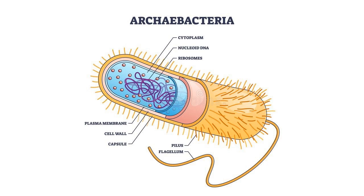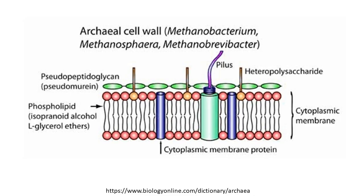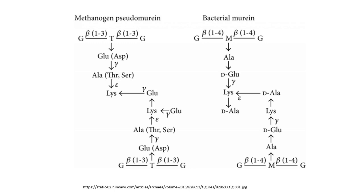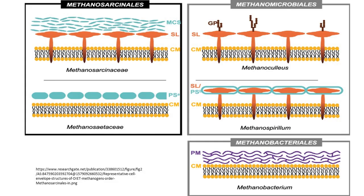Gram-positive archaeobacteria can have a variety of complex polymers in their cell walls. Some archaeobacteria, like Methanobacterium, have walls containing pseudomurein — a peptidoglycan polymer that has L-amino acids and N-acetyltalosaminuronic acid instead of N-acetylmuramic acid, and a beta-1,3 glycosidic bond instead of a beta-1,4 glycosidic bond. Some archaeobacteria contain complex polysaccharides similar to chondroitin sulfate of animal connective tissue. Other heteropolysaccharides are also found in gram-positive walls.